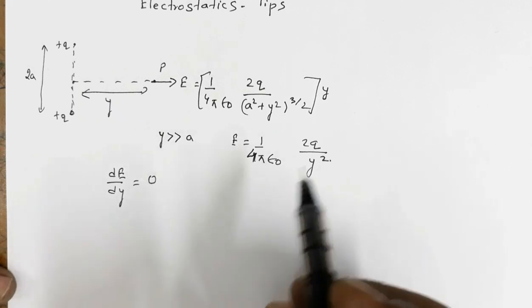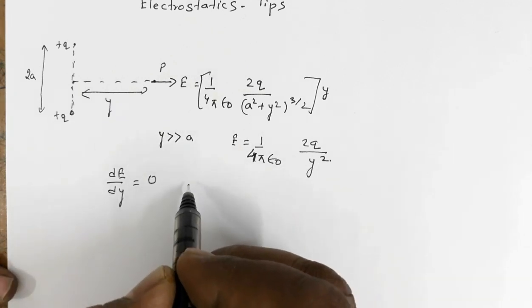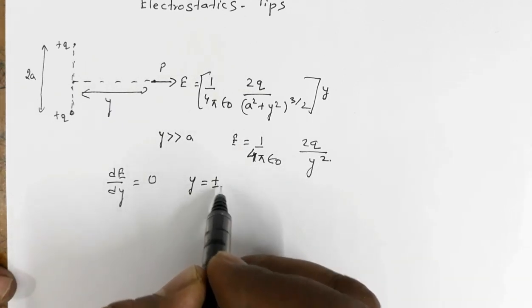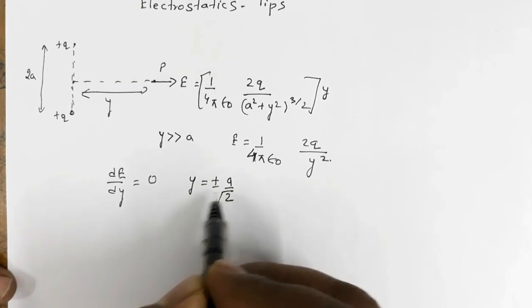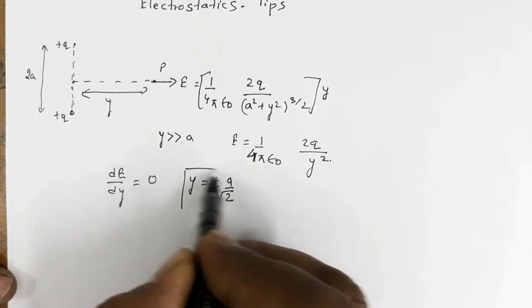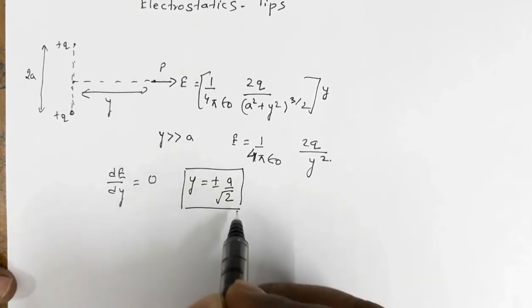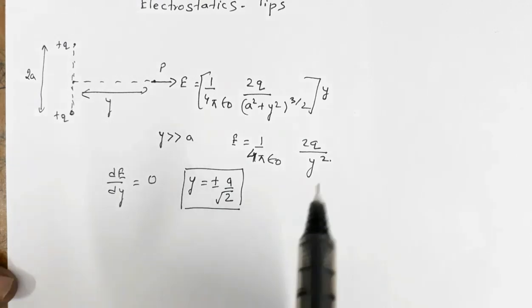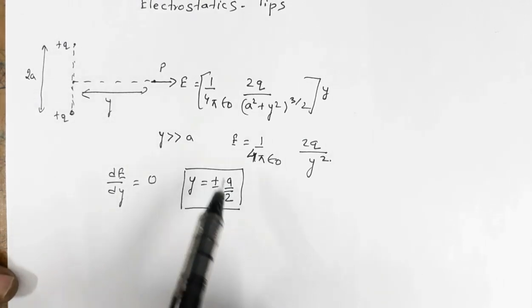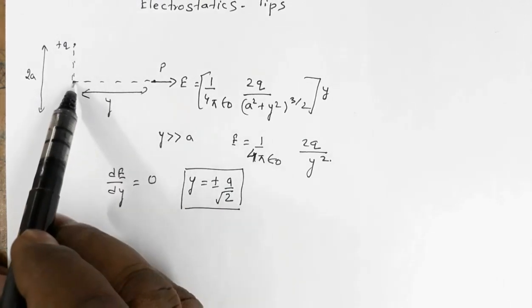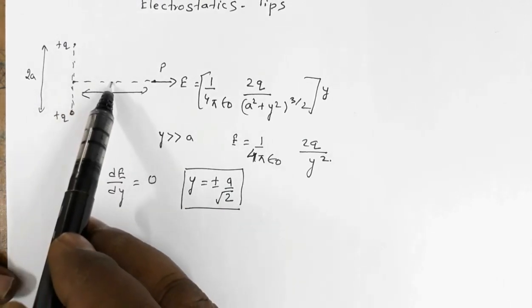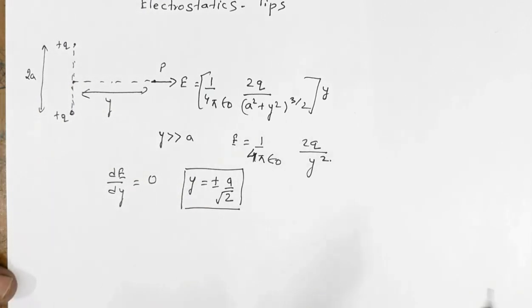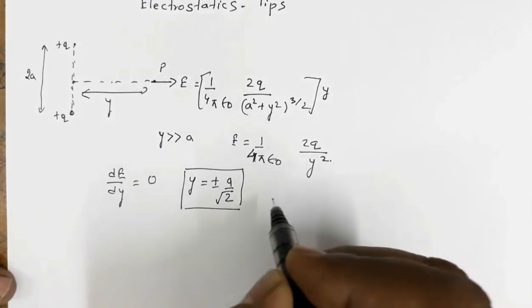...and equate to 0, you will get y = ±a/√2. So at this location, electric field will be maximum. y = ±a/√2 means a/√2 distance along this direction and a/√2 distance along the other direction — the electric field will be maximum.